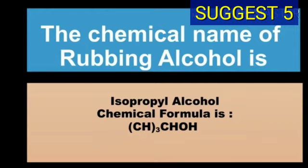The chemical name of rubbing alcohol is isopropyl alcohol and chemical formula of rubbing alcohol is CH3CHOHCH3.